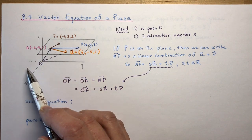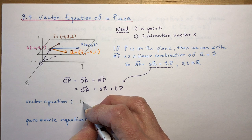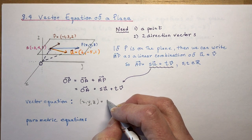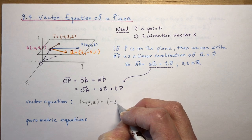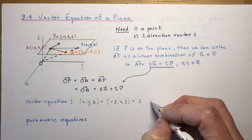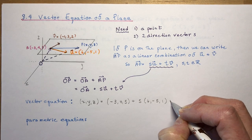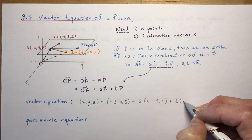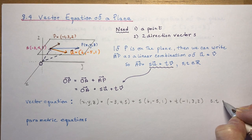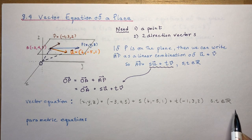So if I asked you to give me the vector equation of this plane, you would say: X, Y, Z is equal to the point minus 3, 4, 5, plus S times the direction vector 6, minus 5, 1, plus T times minus 1, 3, 2, where S and T are elements of real numbers. And that was pretty easy, wasn't it?